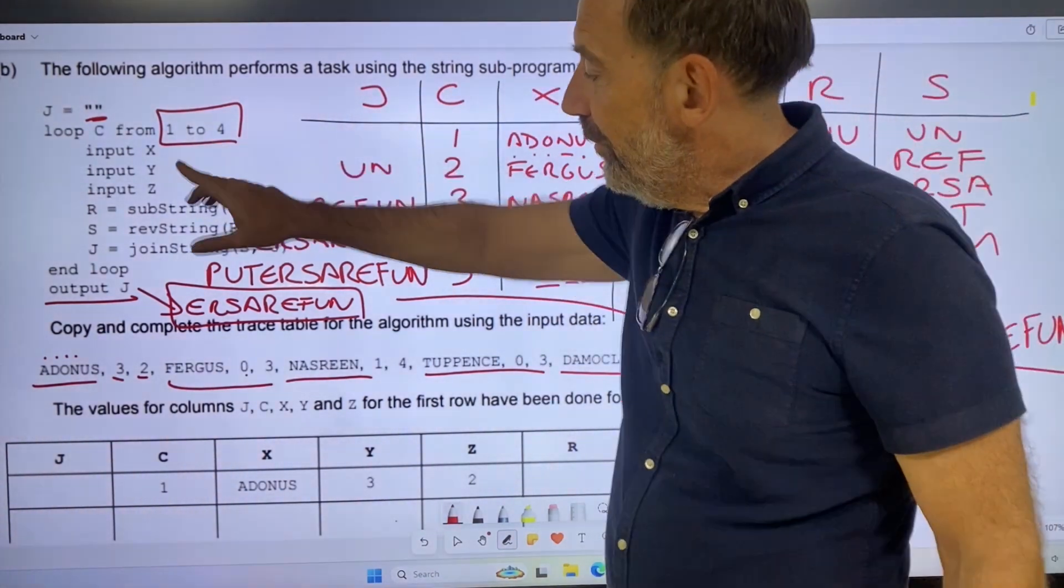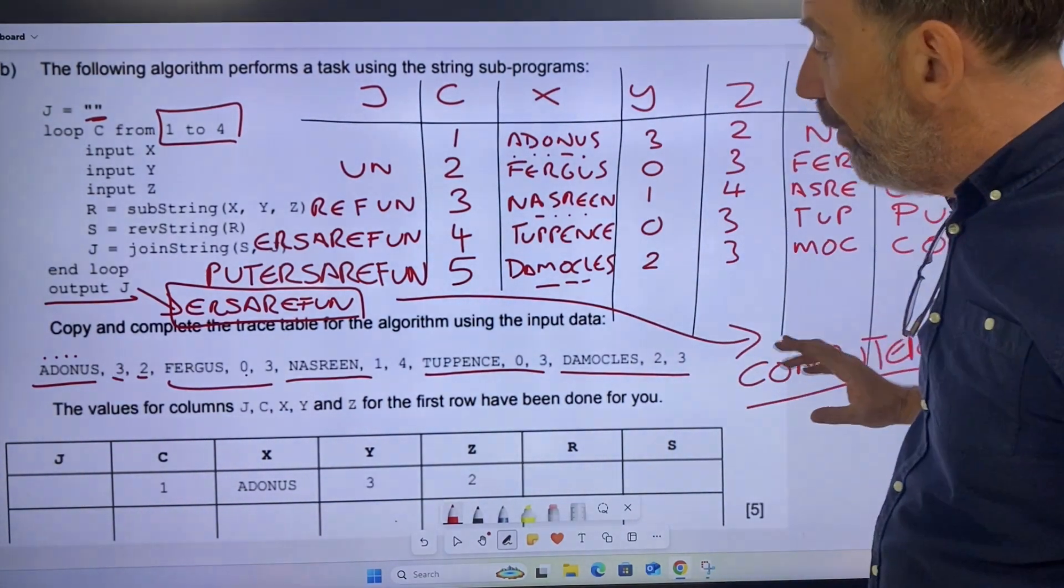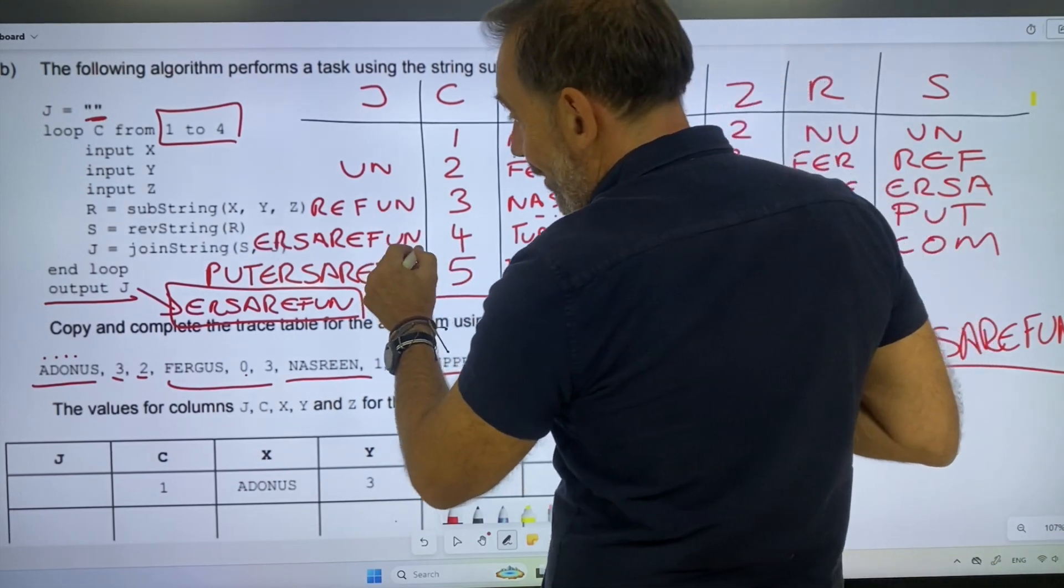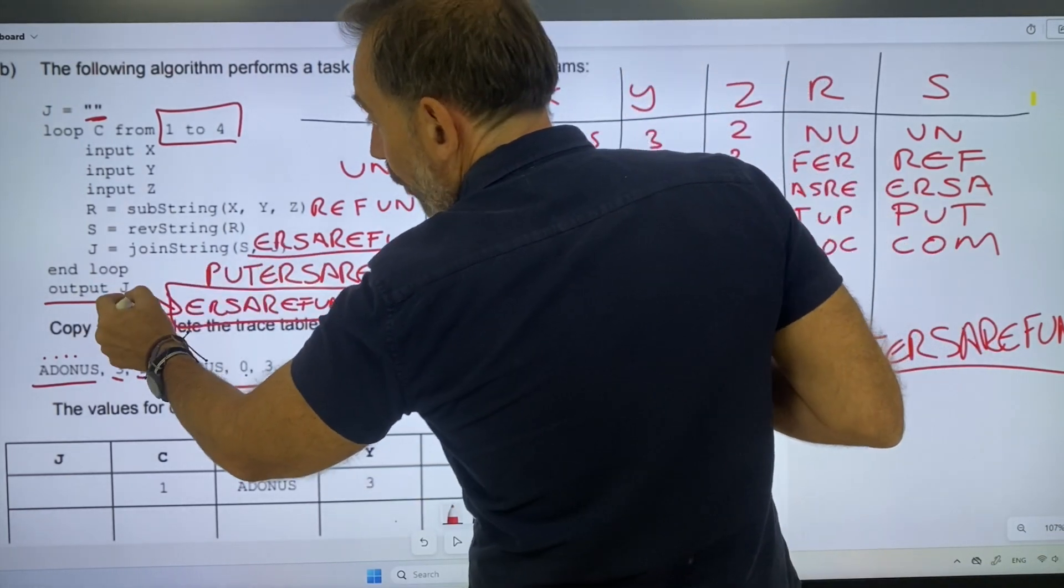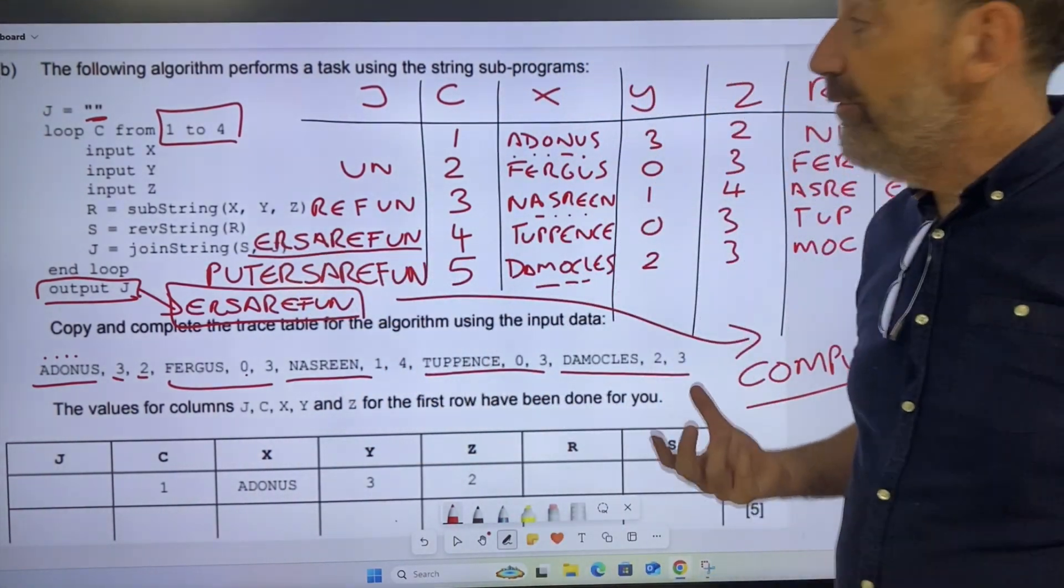But don't get, you could fall into the trap and write that, you will lose marks. The output, one, two, three, four, is that. That is what we should be outputting: P-U-T-E-R-S-A-R-F-U-N.